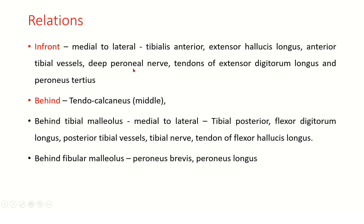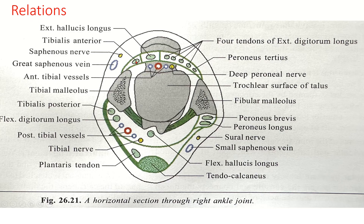Relations: in front, from medial to lateral — tibialis anterior, extensor hallucis longus, anterior tibial vessels, deep peroneal nerve, extensor digitorum longus, and peroneus tertius. Posteriorly in the center is the tendocalcaneus. On the lateral side are peroneus brevis and peroneus longus. On the medial side are tibialis posterior, flexor digitorum longus, posterior tibial vessels, tibial nerve, and flexor hallucis longus.